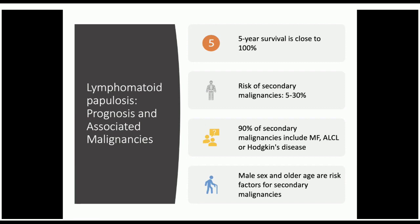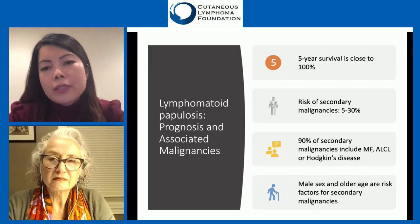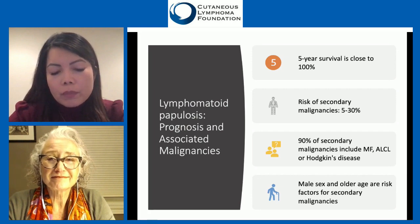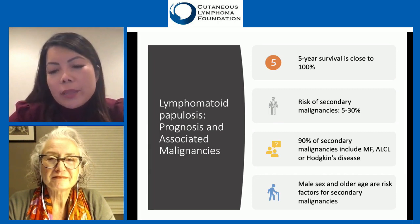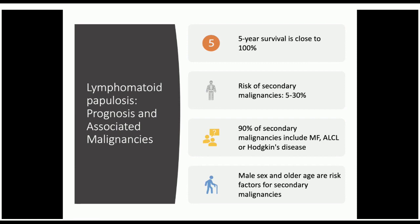Secondary mycosis fungoides is typically early stage, with patients presenting at stage 1A or 1B. Interestingly, the prognosis for mycosis fungoides in patients with lymphomatoid papulosis tends to be better than for others. Less common associations, occurring in less than 10% of cases, include different types of leukemia such as AML and CML, B-cell lymphoma, myelodysplastic syndrome, and multiple myeloma.